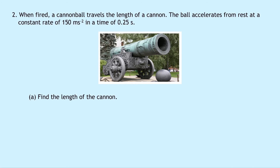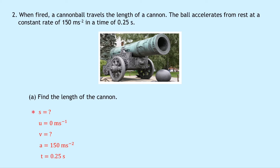Question 2 says when fired, a cannonball travels the length of a cannon. The ball accelerates from rest at a constant rate of 150 metres per second squared in a time of 0.25 seconds. Part A asks to find the length of the cannon, so we're looking for S. Writing down SUVAT: S is unknown, U equals 0 metres per second, we don't know V, A equals 150 metres per second squared, and T equals 0.25 seconds. We don't know V, so we use the equation without V: S equals UT plus half AT squared.